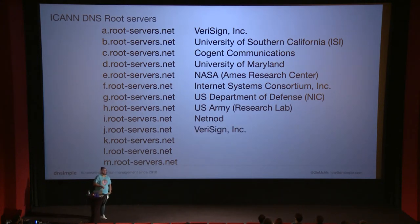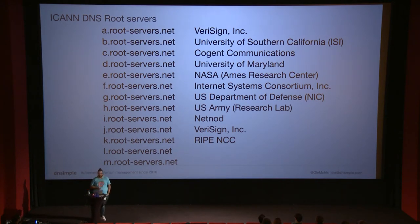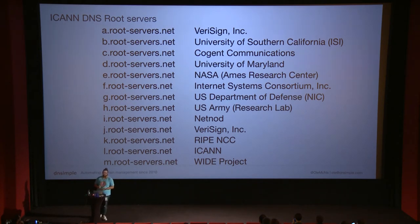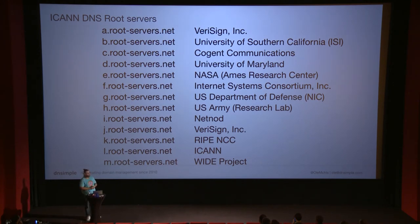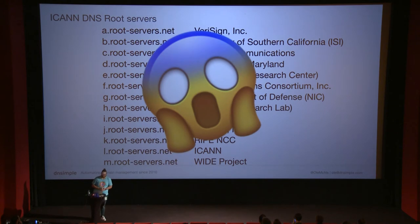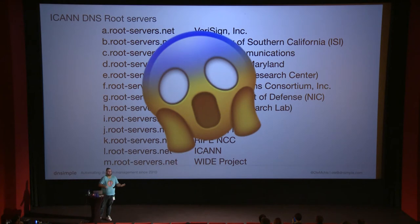So there are our 13 independent operators — except it's only 12, because one slot broke and there was no one to replace it. There's also RIPE, a regional internet registry for Europe, West Africa, and the former USSR, headquartered in Amsterdam with a branch in Dubai. There's ICANN itself, and the WIDE Project — an internet project in Japan founded by Keio University, the Tokyo Institute of Technology, and the University of Tokyo. When I saw this list for the first time, I was shocked — we're talking about the open internet, and almost everything on this list is controlled by the US. I'm pretty uncomfortable with that.